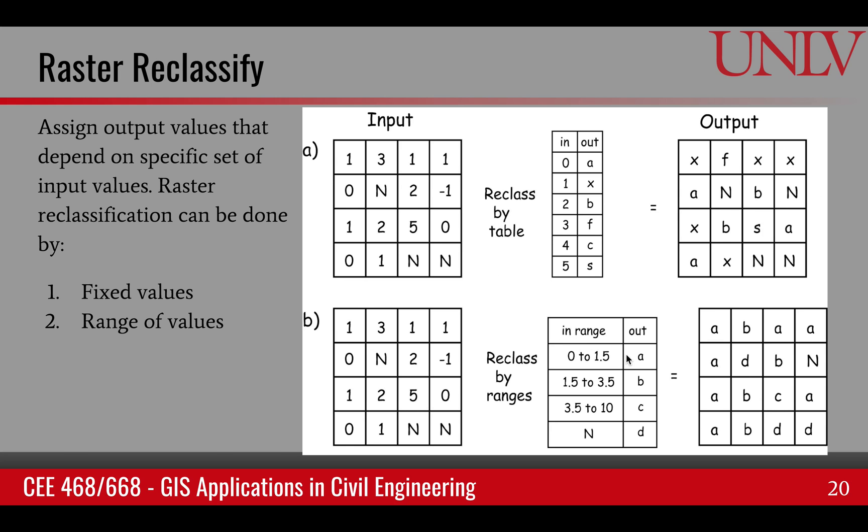But we can also apply it on a range of values. For example, in this case, we can say all the values between 0 and 1.5 become A, 1.5 and 3.5 become B, so on and so forth. Now, I want to point out here that if the input has null, it will lead to a null. But you can also apply a reclassification of the null. For example, if the value is null, convert it into D. So that's another way of reclassifying null values.